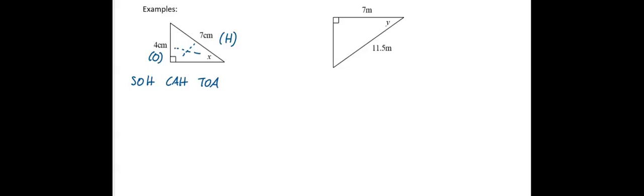You have to decide which one of our three trig ratios — sine, cosine, or tangent — we're going to use. In our triangle we have O and H, and sine is the first trig ratio that has O and H, so we will be using sine. Write down the trig ratio: sine theta equals O over H. Then fill in what you know: sine of x equals the opposite, which is four, over the hypotenuse, which is seven.